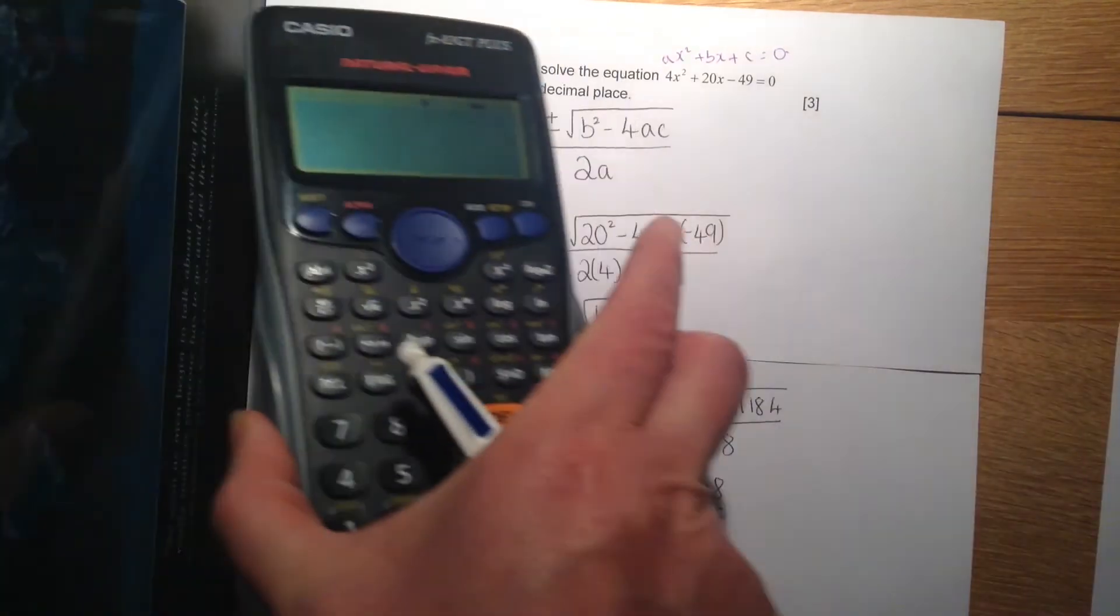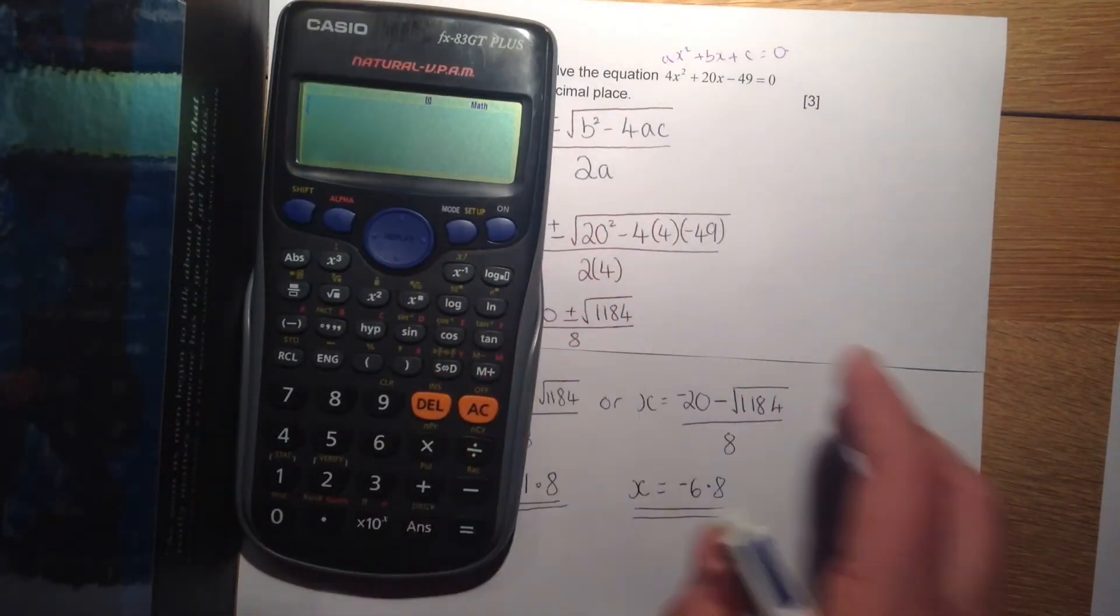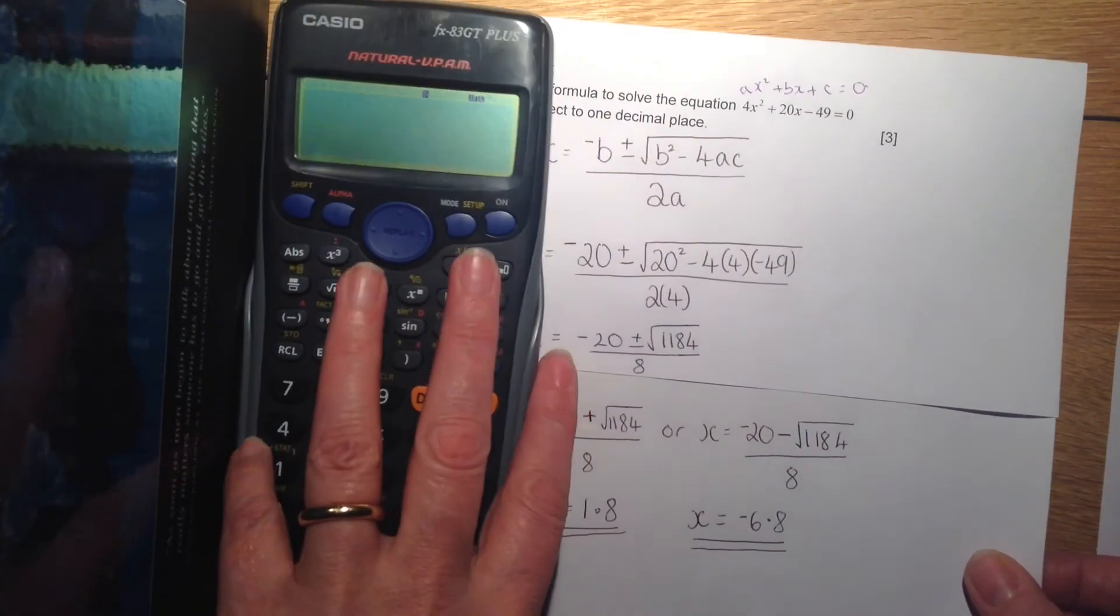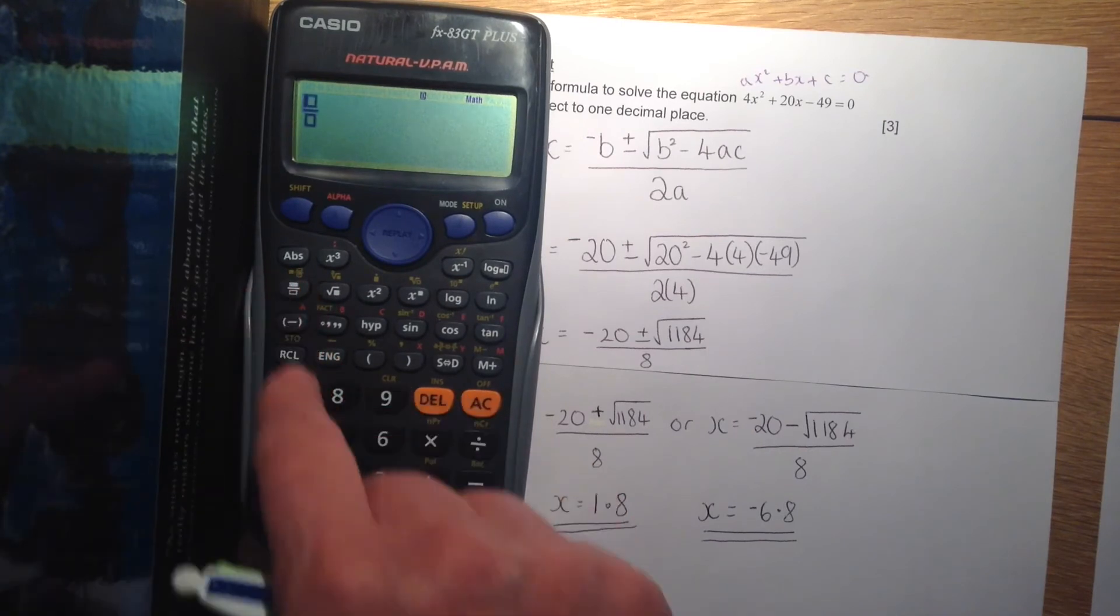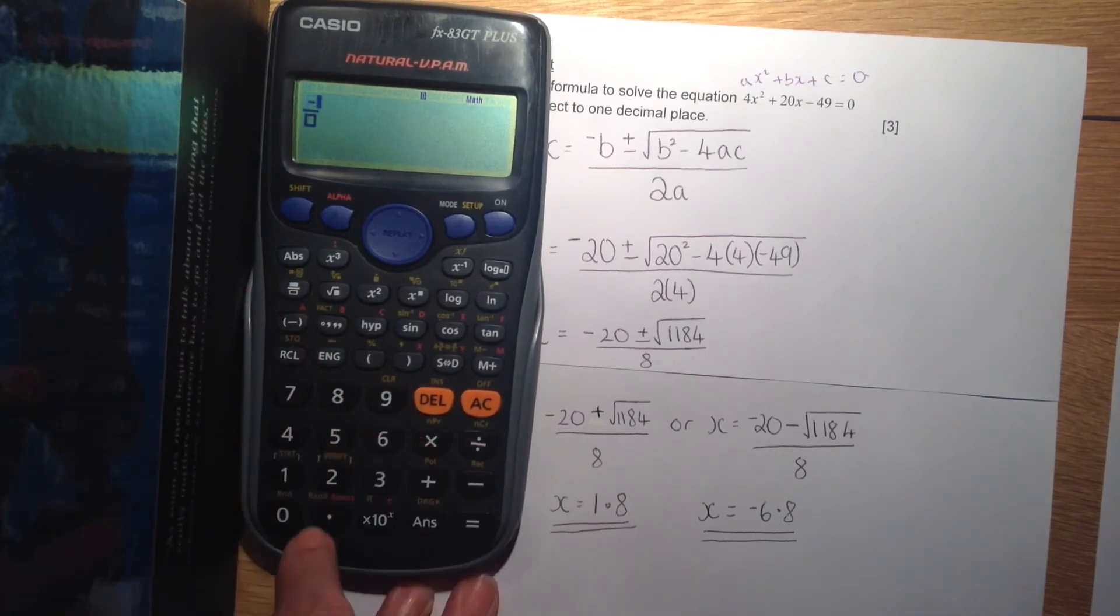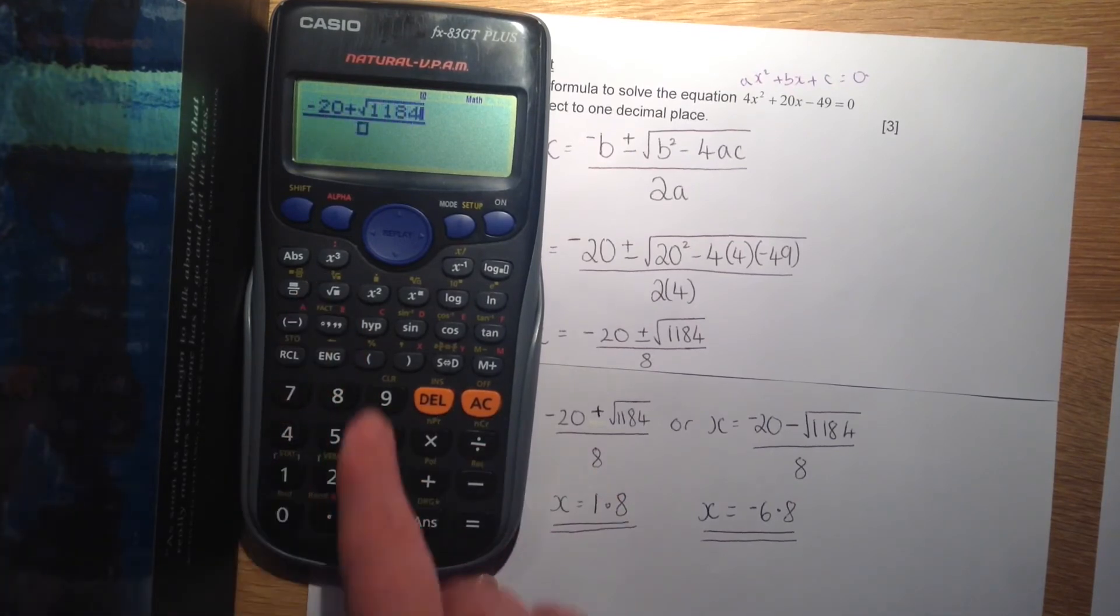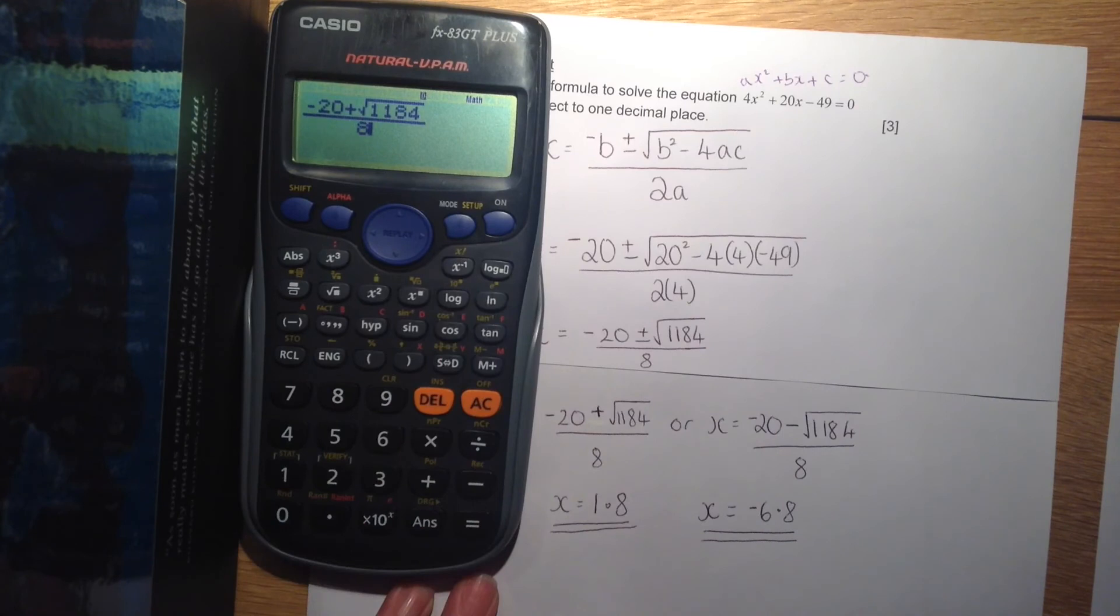So just popping them into our calculators. The first one is pressing the fractions button, minus 20 plus root 1184 over 8 equals.